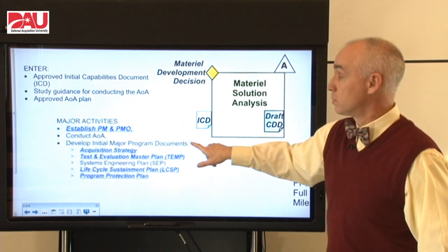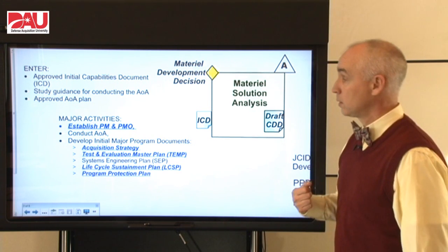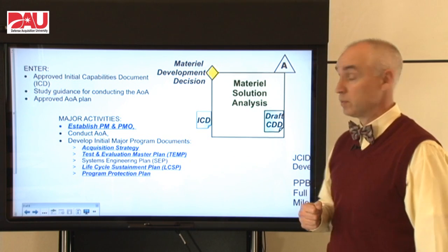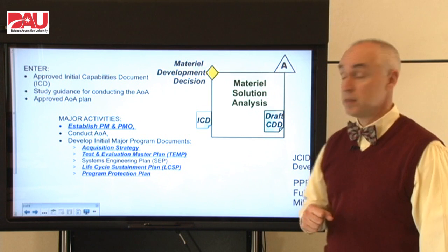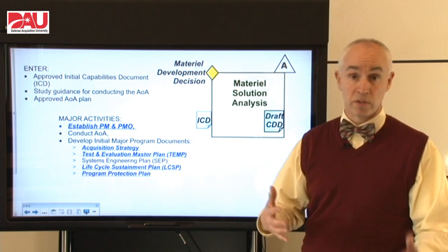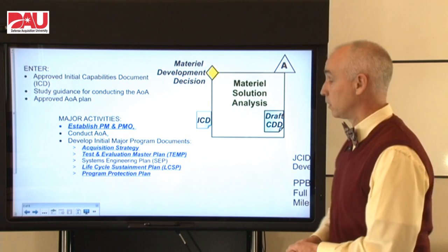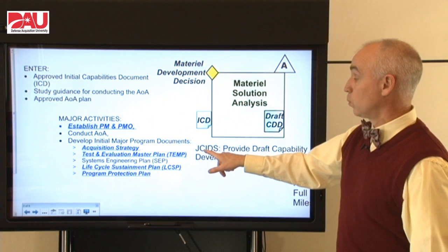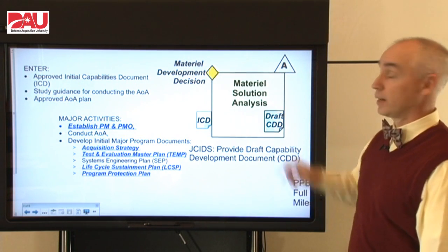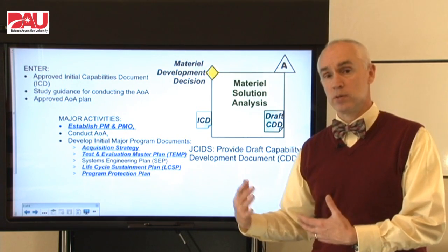During this phase, major activities include establishing a program office and a program manager. Then we're going to conduct the AOA — the program manager and program management office will oversee that, though it typically happens outside the organization. Within the organization, we're developing the major program documentation needed for the next milestone. This is typical of all phases: we're doing the analysis, design, and testing as the main effort while also planning for the next phase. In this case, our acquisition strategy is that plan. We need to interact with our users through the JCIDS system quite a bit, as they'll provide us with a draft capability document toward the end of the phase.